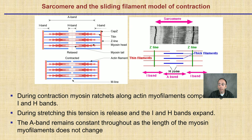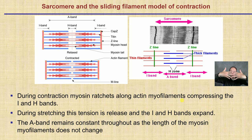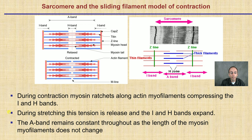Now, sarcomere and sliding filament theory — there will be another video on that specifically. But during contraction, myosin ratchets along the actin myofilaments, compressing the I and H-bands. Basically there's a sliding occurring — even though we have thick and thin filaments, there's this sliding, which is how you get the term sliding filament theory. The A-band remains consistent throughout as the length of the myosin myofibrils does not change. The H-band is very spread out in the relaxed state, and here it is contracted because the filaments have slid over.